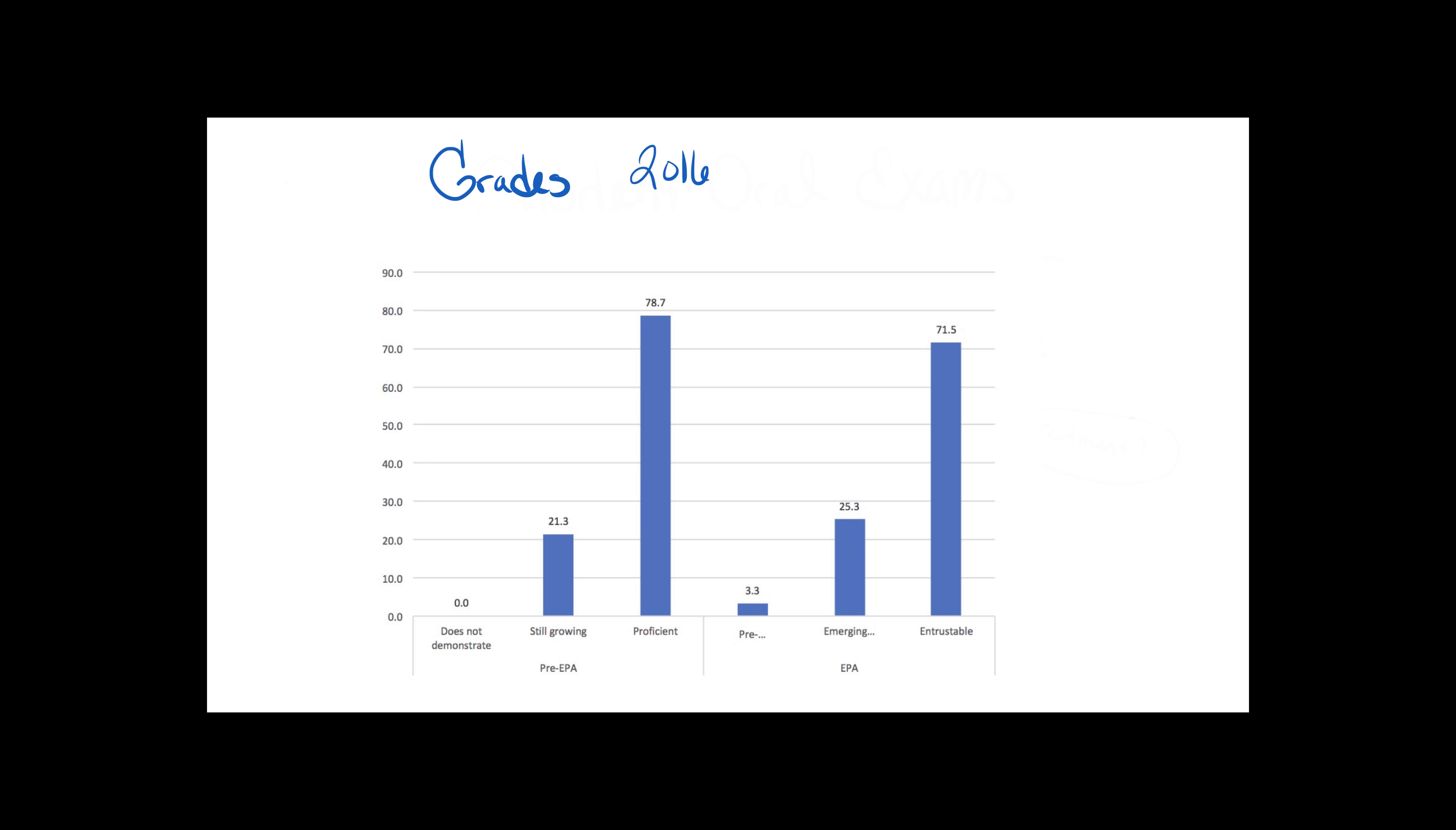Here you can see some of the recent data both before and after the advent of EPAs on grading in the clerkship oral exams. I thought this would be interesting not only to show how well our students do, but also to show a little bit of the impact of an EPA grading style for the grades they received. You can see in the pre-EPA era, a large majority of the students were viewed as proficient, almost 80%, and about 20% were seen as still growing. Interestingly, not a single student was put in the category of does not demonstrate.